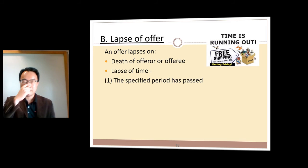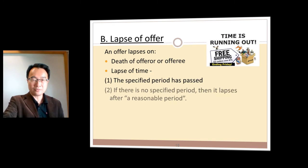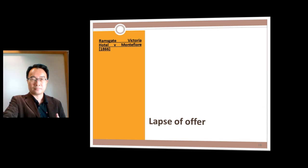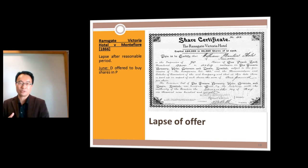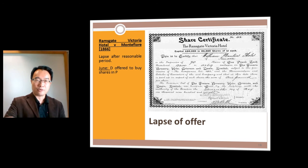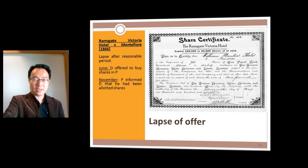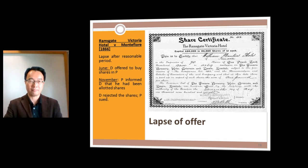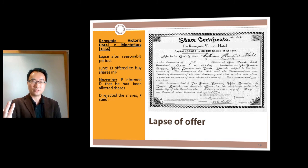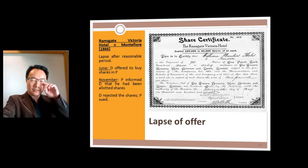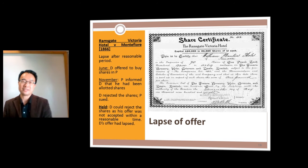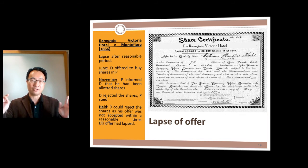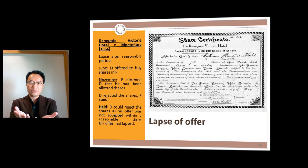An offer can also lapse. If no time period is specified, it lapses after a reasonable period. In Ramsgate Victoria Hotel v Montefiore, Mr. Montefiore offered to buy shares in the hotel in June, but the hotel only allotted him the shares in November. By then Montefiore had changed his mind and refused. The judge said he could reject it because the offer had lapsed — he offered in June and it was now November, so it was over.